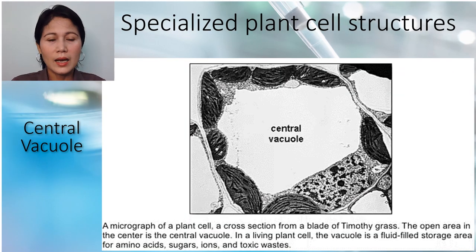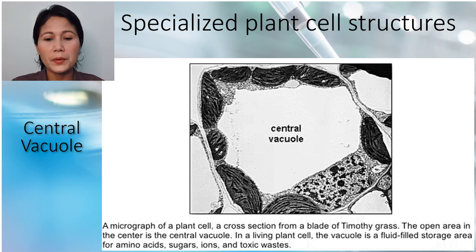Now let's go to the specialized plant cell structures. Let's have first the central vacuole. This is a micrograph of a plant cell, a cross section from a blade of Timothy grass. The open area at the center is the central vacuole.